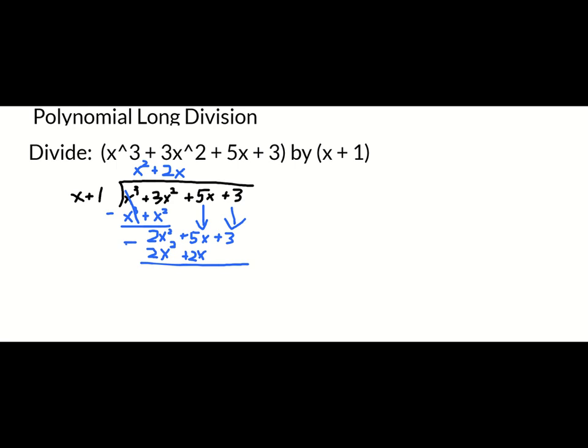5x minus 2x gives me 3x. And I bring down the 3. So I have 3x plus 3.